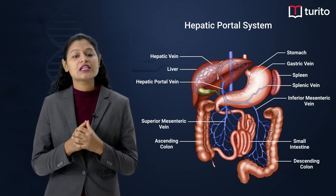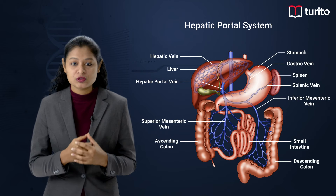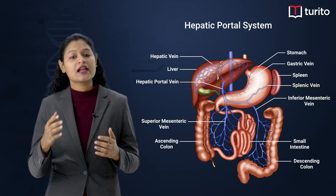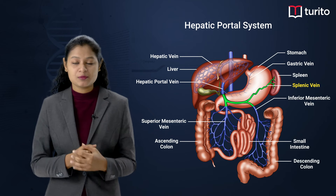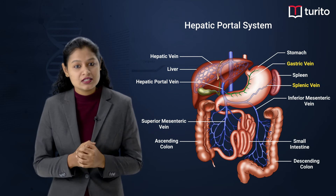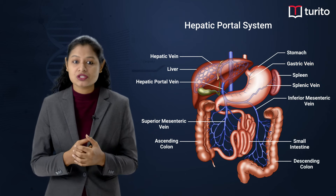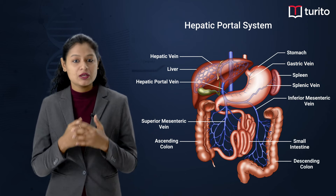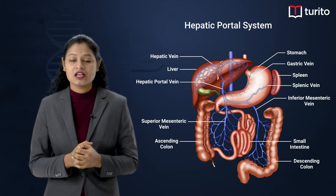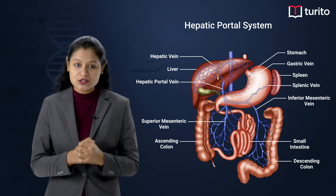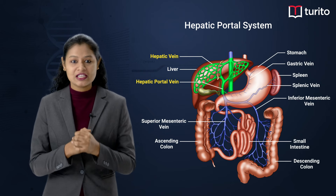The gastrosplenic vein is a fusion of the splenic vein and the gastric vein. The splenic vein carries deoxygenated blood from the spleen, and the gastric vein carries blood from the stomach. This fusion forms the gastrosplenic vein, which opens into the mesenteric vein of the pancreas. All of these fuse into the hepatic portal vein, which opens into the liver.